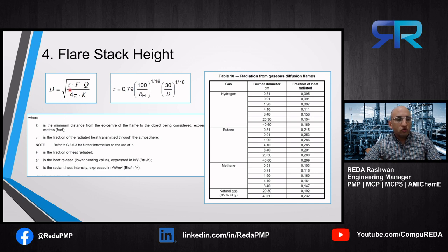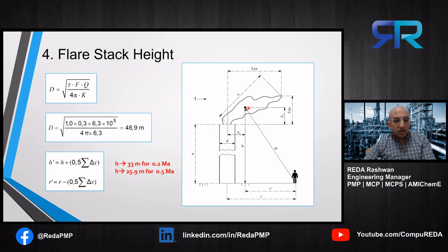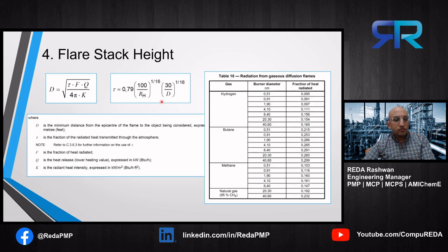D equals the square root of (τ × f × Q) / (4π × k). τ (tau) is the fraction of heat radiated through the atmosphere — not all radiated heat from the epicenter reaches a person due to humidity absorption. The API takes the conservative approach, assuming dry weather so all radiated heat reaches the person. If you want to account for atmospheric absorption, you can use a separate equation. So tau equals 1 in the API.